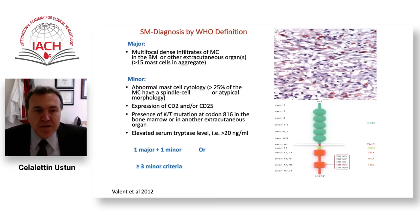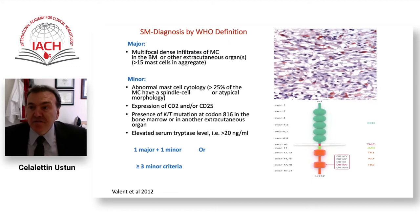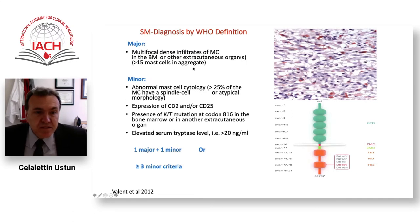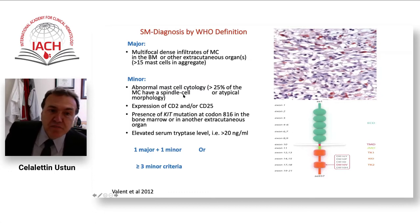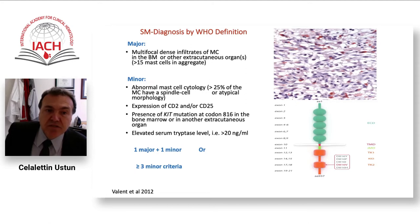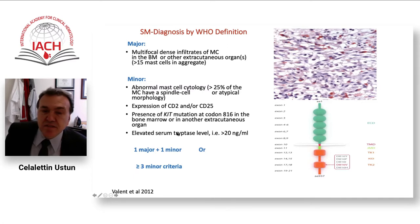We almost always do a bone marrow biopsy, but it can also be liver or another organ — it must be other than skin. The minor criteria are: mast cells showing abnormal morphology, generally spindle cell, in more than 25%; aberrant expression of CD2 and/or CD25; KIT D816V mutation in adults; and serum tryptase elevated greater than 20.